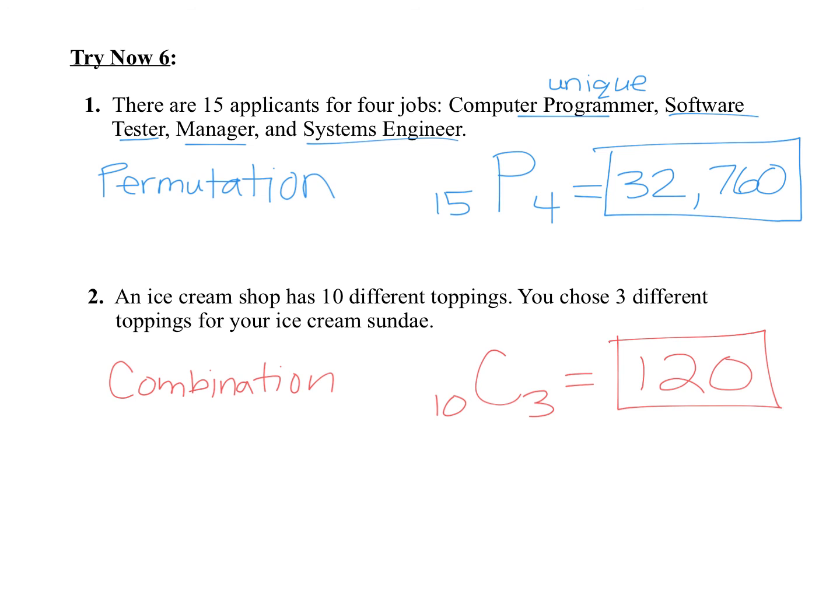And this concludes lesson 3.3, day three. Your homework assignment is going to have you practicing determining if something's a permutation or a combination, and then calculating the value. Remember that you can use your graphing calculator to help you find the number of ways that the thing can occur. You just have to decide on your own first whether it's a permutation or a combination. Thanks for watching, and good luck as you try some problems on your own. Bye.